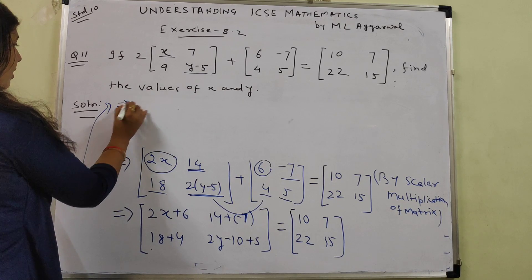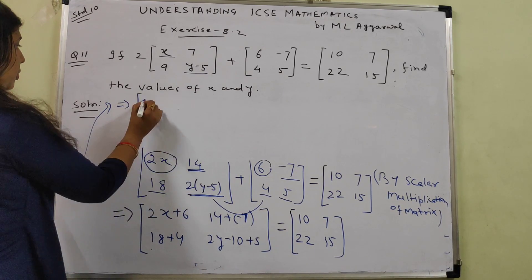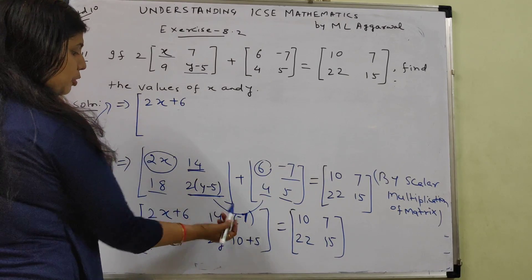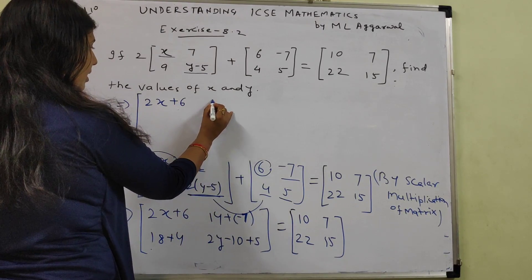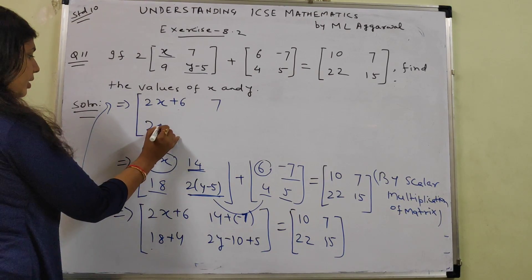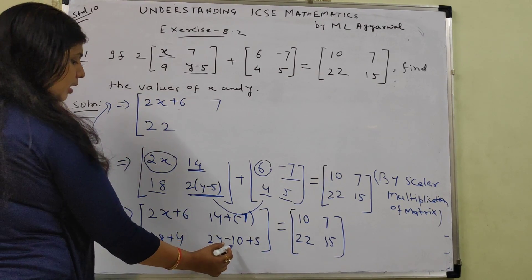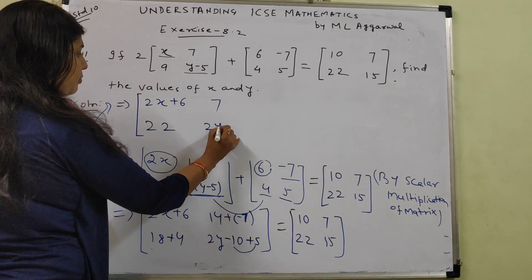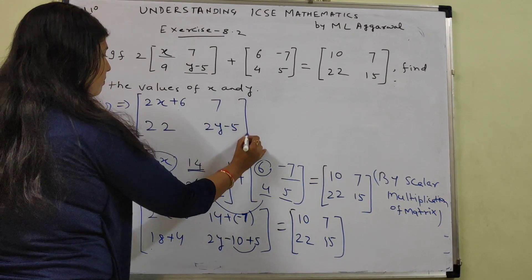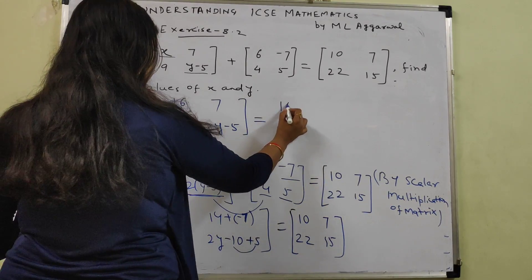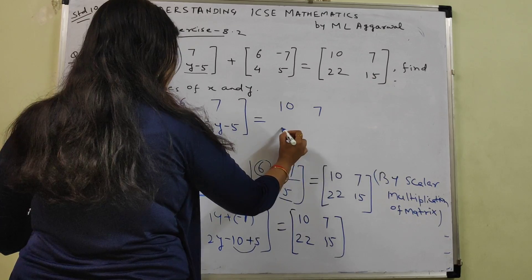So this implies 2X plus 6, plus into minus. So 14 minus 7 will be 7. 18 plus 4 will be 22. Minus 10 and plus 5 will be minus 5. So 2Y minus 5 is equal to 10, 7, 22, 15.